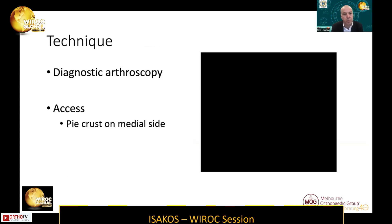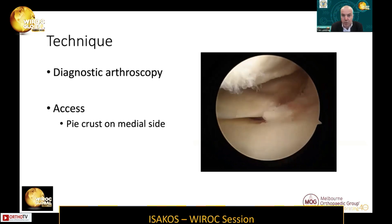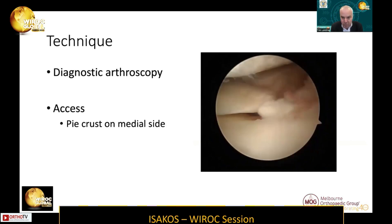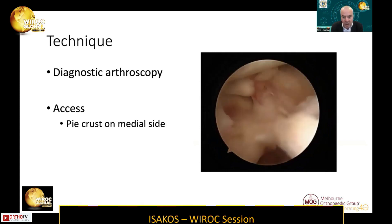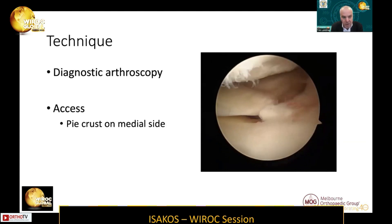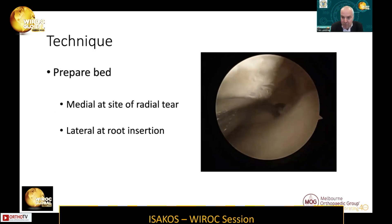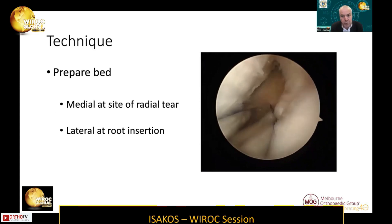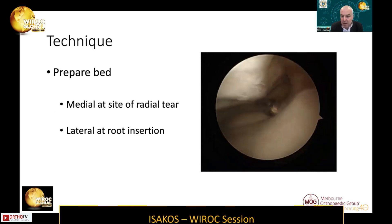In terms of surgical technique, this operation begins with a diagnostic arthroscopy to confirm the injury is present and to evaluate the amount of condylar damage. If there's already exposed bone in the compartment, it's probably too late. We also want to make sure the meniscus will hold the stitches. I use pie crusting on the medial side to allow adequate access. The next step is to prepare a bed for the repair — on the medial side at the site of the radial tear, and on the lateral side at the root insertion. I use a ring curette to remove some cartilage in the repair area, then a mechanical shaver to remove the debris.